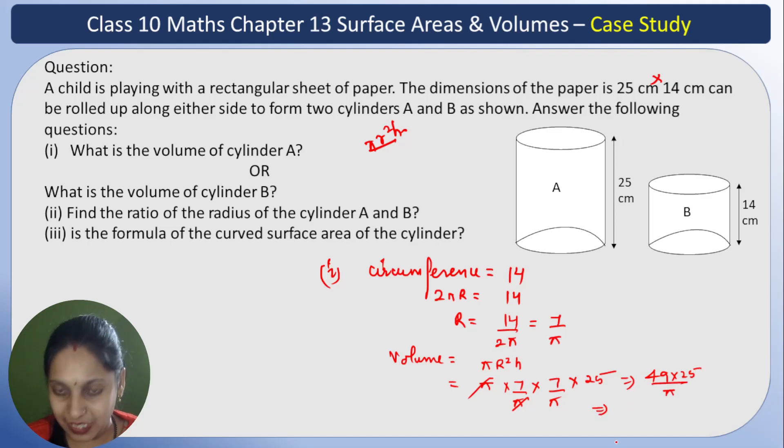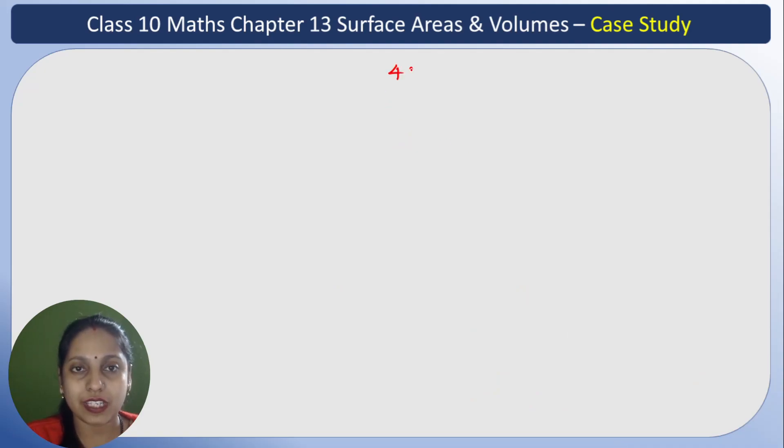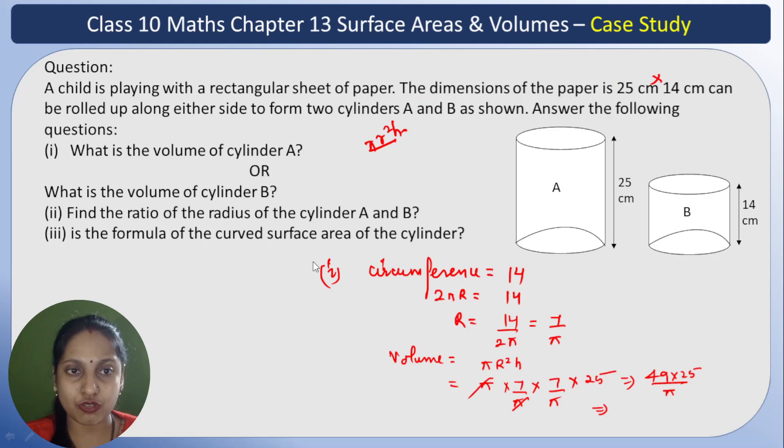49 times 25 upon 22 upon 7. So 49 times 25 upon 7 upon 22. Now you can solve this. The unit is centimeters - after solving, it's centimeter cube. Clear. This is the first part.